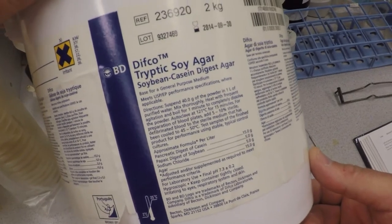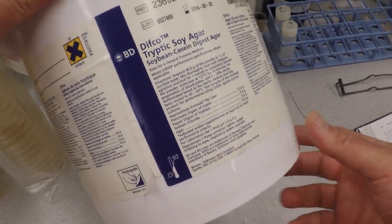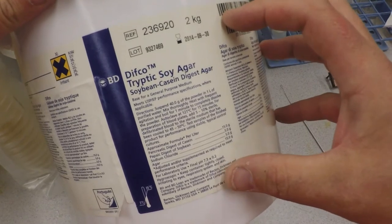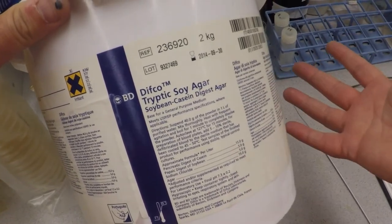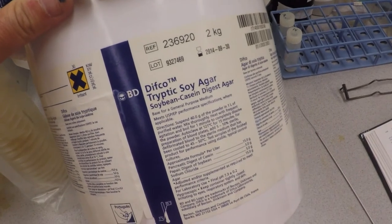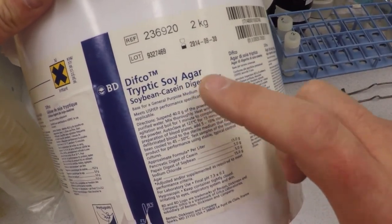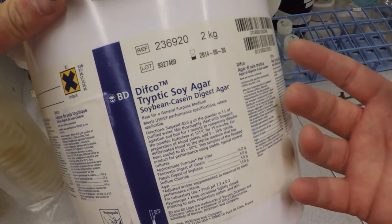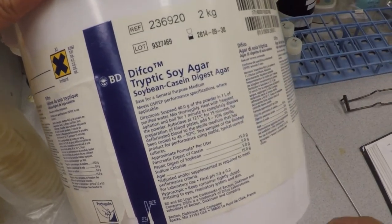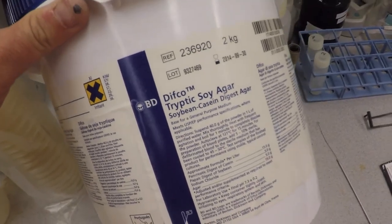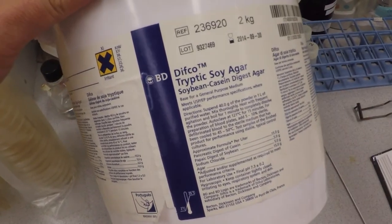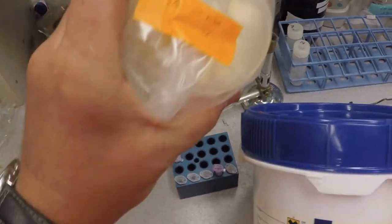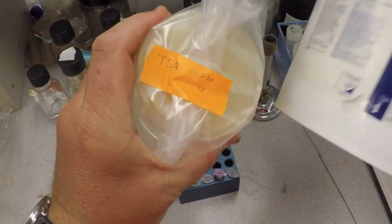This is a complex medium that somebody has made. Difco is the company. This stuff comes in a big vat. All you have to do is take this powder, follow the directions, add it to an Erlenmeyer flask with your water, sterilize it, and then you can pour your plates and use it. This already, because it says agar, has agar in it. If you see something else that says tryptic soy broth, that means there's no agar—you've got to add agar to it to make it solidify.